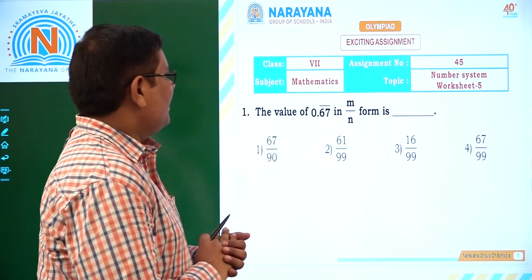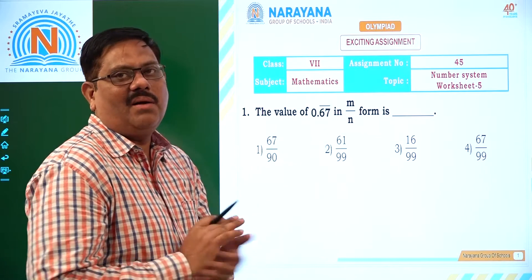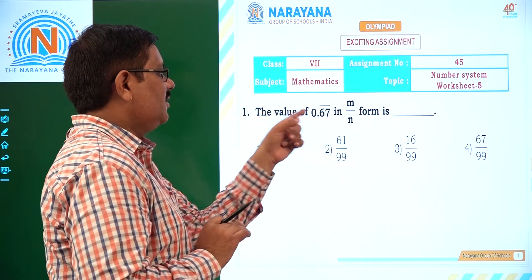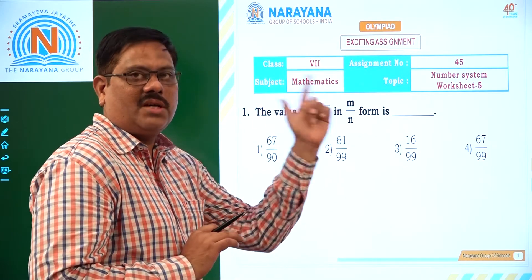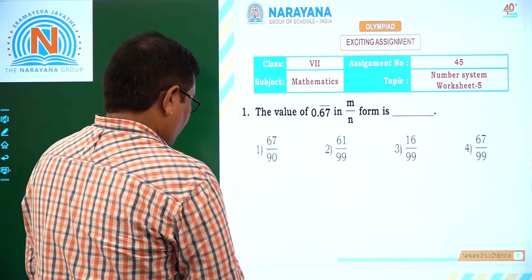Now let us see the first question. The value of 0.67 bar in m by n form means you have to convert 0.67 into a rational number form. Rational number form is m by n form. Now how to do that?